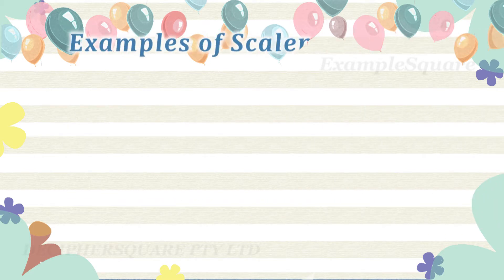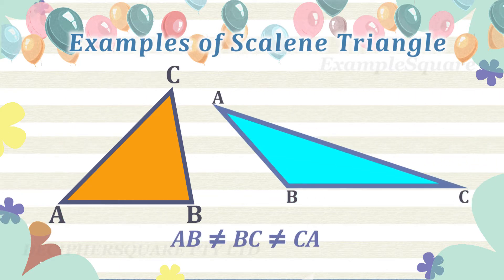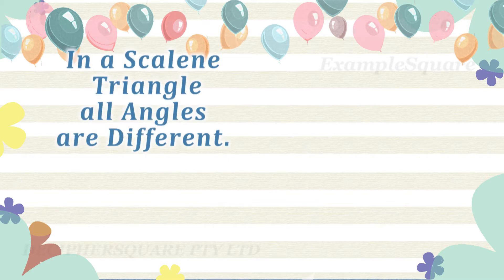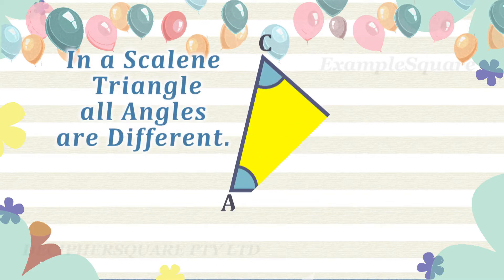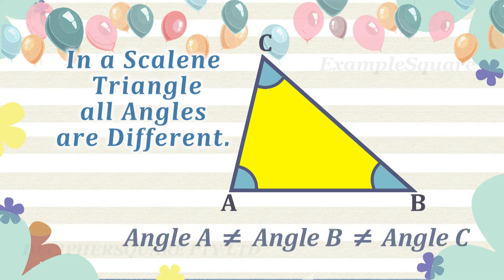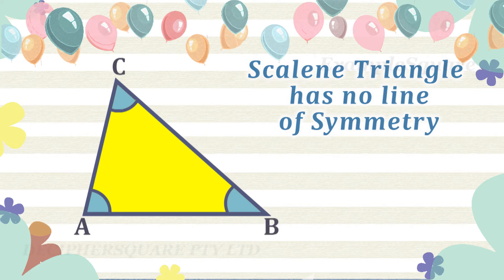These are some examples of a scalene triangle. In a scalene triangle, all three angles are different — that is, all three angles are unequal. A scalene triangle has no line of symmetry.